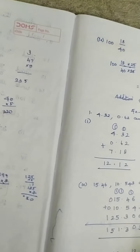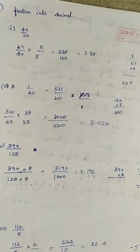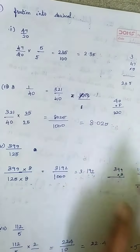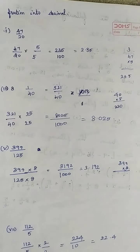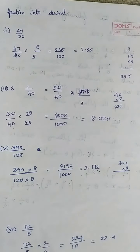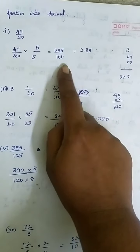Your first question is 47 divided by 20. In the denominator you have 20. You have to convert it into multiples of 10, 100, 1000. So how to make 20 into 100? When you multiply the denominator 20 by 5 you will get 100. So whenever you multiply or divide, you will be doing it in both numerator and denominator. So 47 into 5 divided by 20 into 5. 47 multiplied by 5 gives you 235. 20 into 5 is 100.